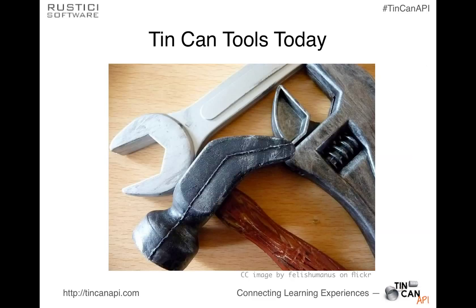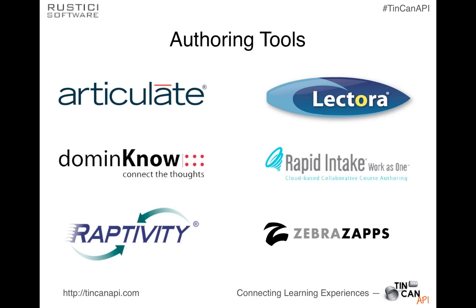I hope you guys will be able to take something away. I want you to look at how we're moving beyond the page turner, how we've broadened the ecosystem, and really think about how learning can happen wherever, whenever, and however it's most effective and most necessary. Starting in on some of the traditional authoring tools that are starting to support Tin Can, you're seeing a lot of the traditional e-learning vendors jump in and acknowledge that this is going to be the way the industry is working going forward.